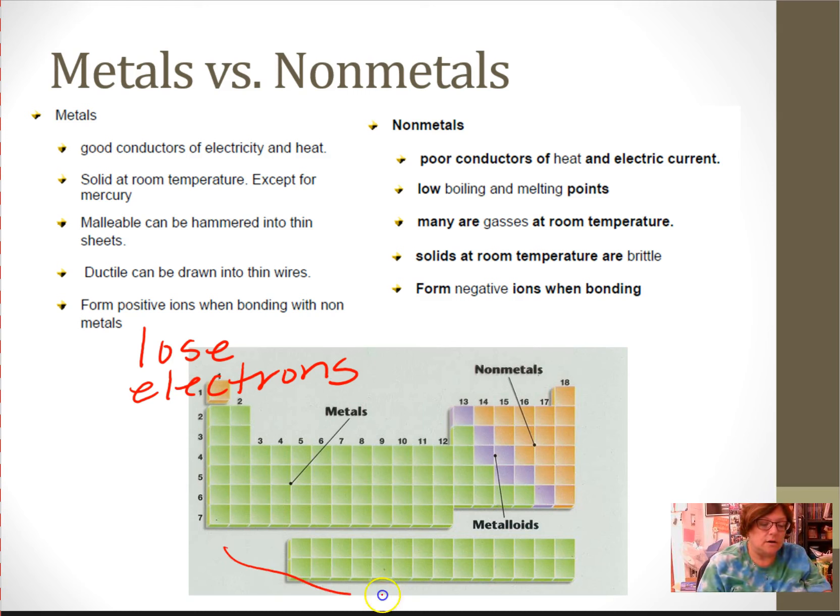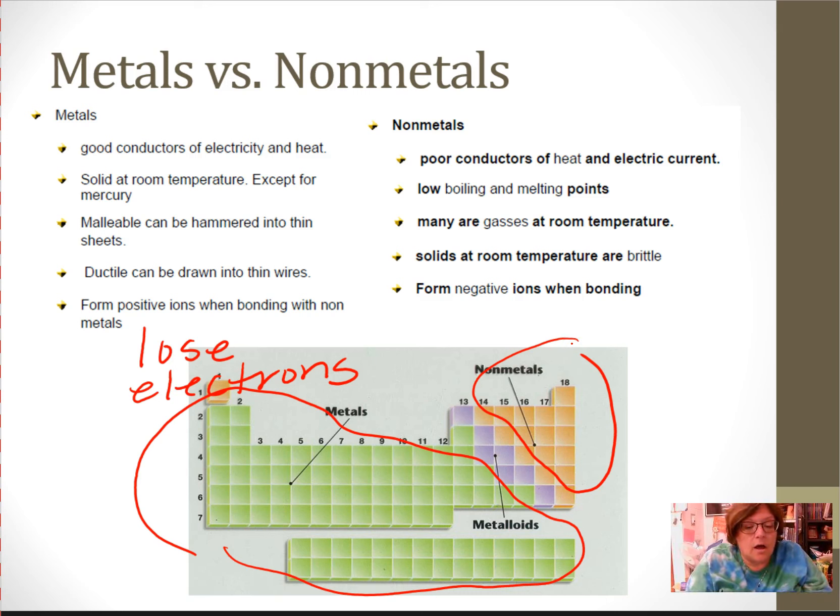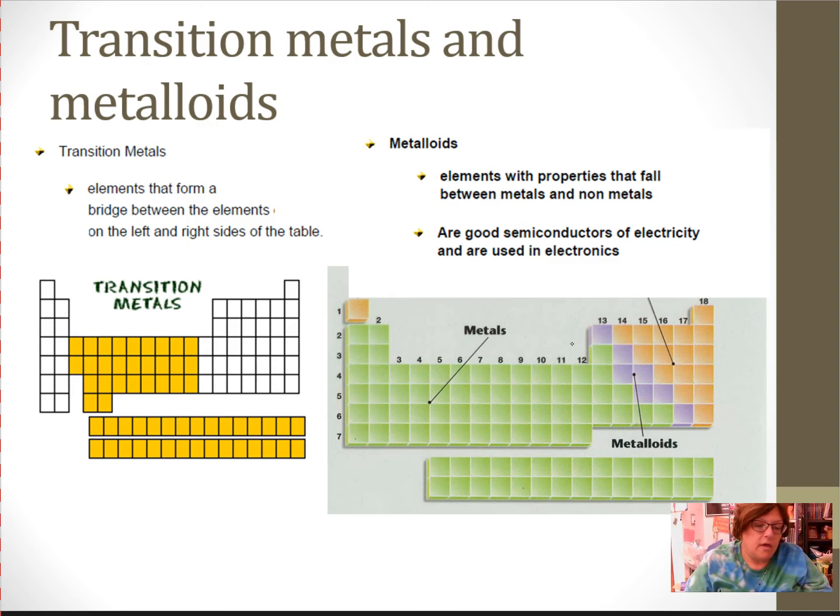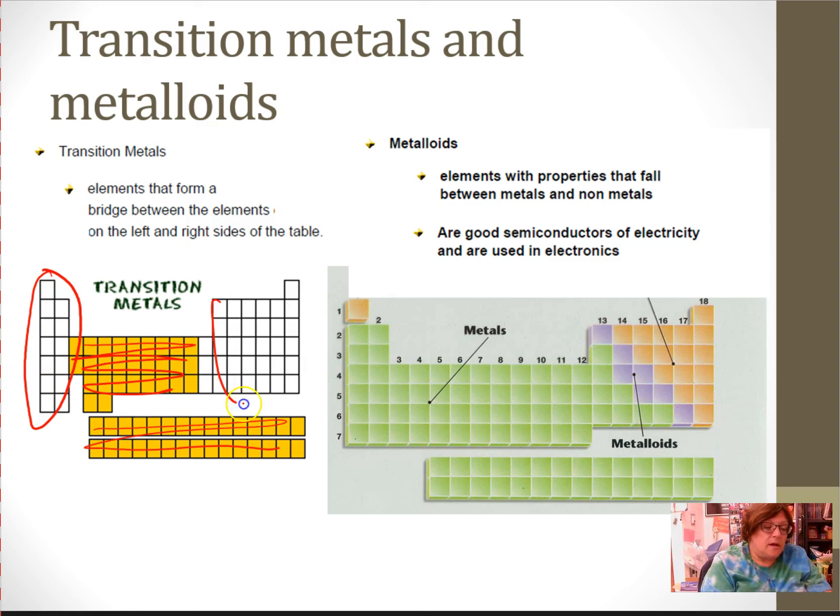Metals, you can see, are in green on here. They make up the left half. Non-metals are up in the upper right-hand corner. And we're going to talk about transition metals and metalloids here in just a moment. Transition metals are this bridge in between. And sometimes these two are considered transition metals. Sometimes they're not. I still tend to refer to them as rare earth elements because that's what they were when I was young. But transition metals are basically forming a bridge between the first two families of metals and then the metals over here.